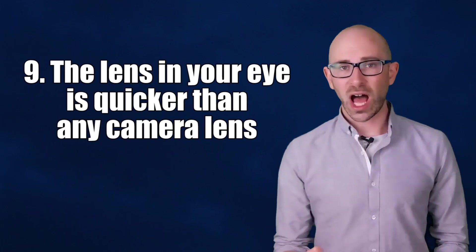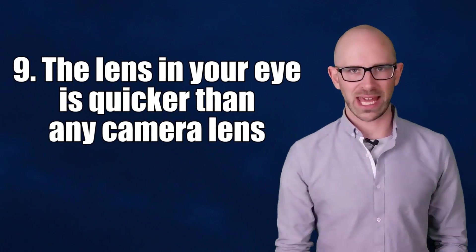The lens in your eye is quicker than any camera lens. Just behind the pupil sits the eye's natural lens, whose function is to focus on the object you are looking at. Just take a minute to glance around the room and think about how many different distances you are focusing at. Every time you do this, the lens in your eye is instantly changing focus without you even being aware of it.